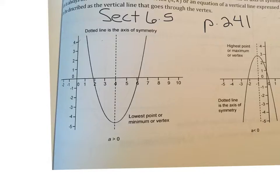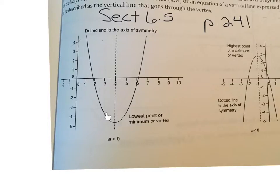The graph of a quadratic function is called a parabola, and it has the shape of a U or an upside-down U, which some people call a frowny face. There are some aspects of this graph you need to be aware of. The vertex would be the lowest point or the highest point on the graph.